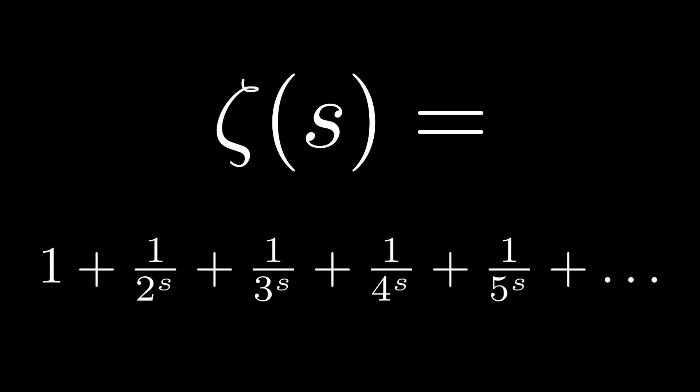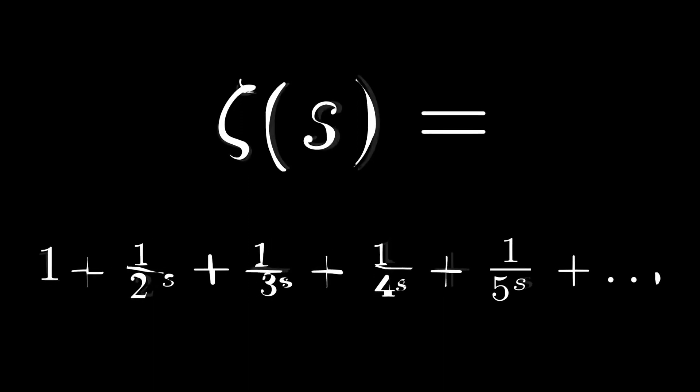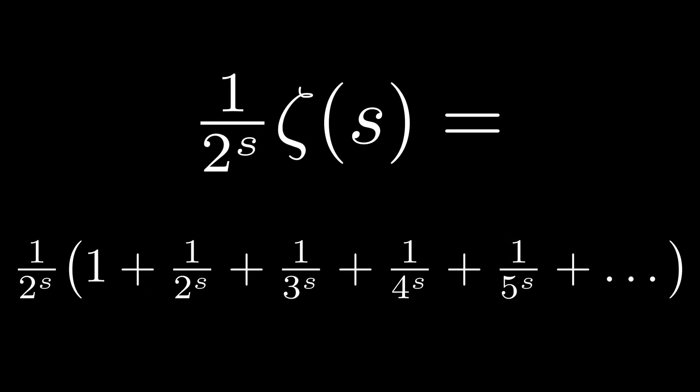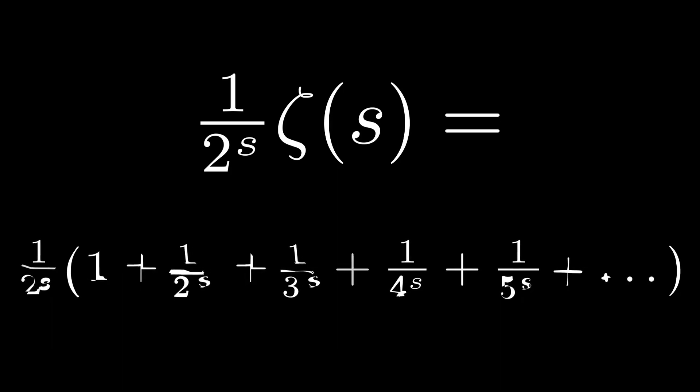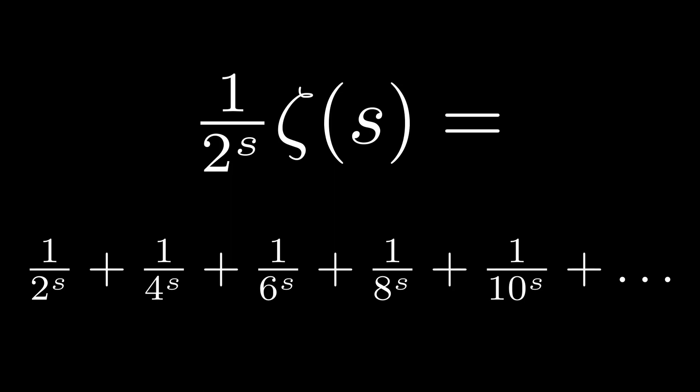To begin, consider the zeta function multiplied by 1 over 2 to the s. If we distribute 1 over 2 to the s to every term in the infinite sum, we have 1 over 2 to the s, plus 1 over 4 to the s, plus 1 over 6 to the s, and so on. Each term in the sum now has in its denominator a multiple of 2 to the power of s.